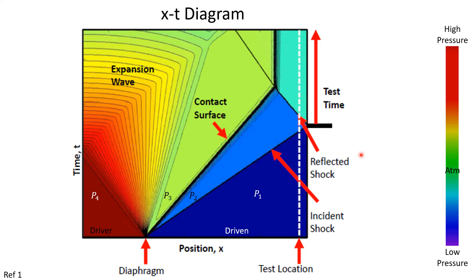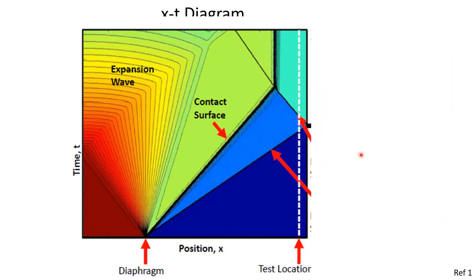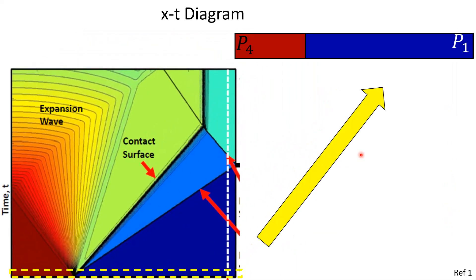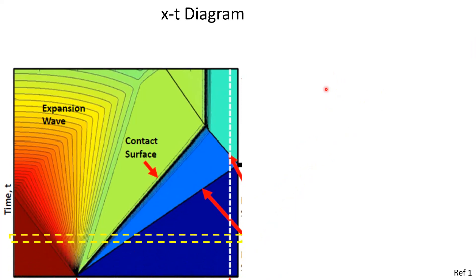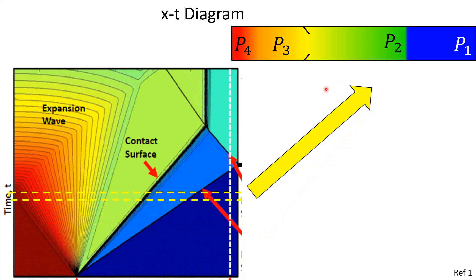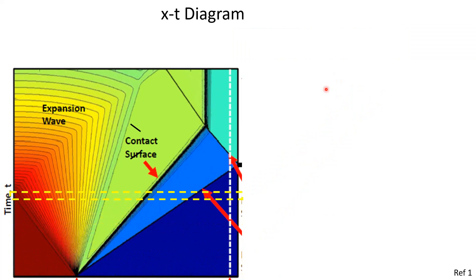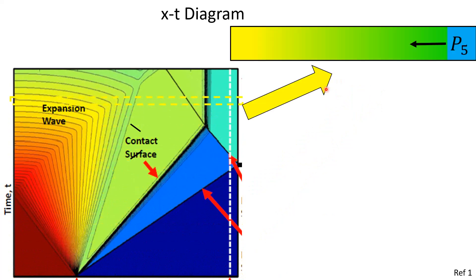To get a little bit better idea of this, if we show this time zero here, that looks an awful lot like the initial conditions that I showed previously in my shock tube diagram. And then if we move that up, that looks kind of like the intermediate step that I showed previously. And then if we move that way up, that looks a lot like the state of the shock tube after the reflected shock passes.